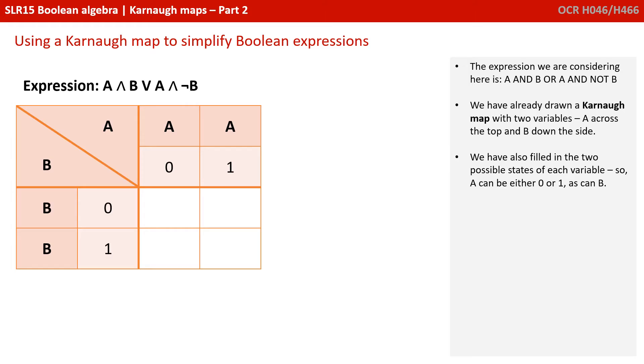So the expression we're going to consider here is A and B or A and not B. Now we've already drawn a Karnaugh Map with two variables, A across the top and B down the side. And we've also filled in the two possible states for each variable. So A can either be zero or one, as can B.